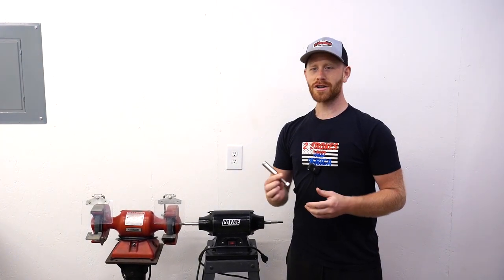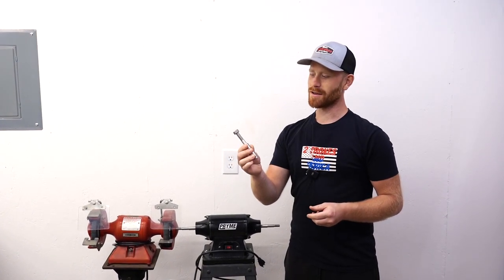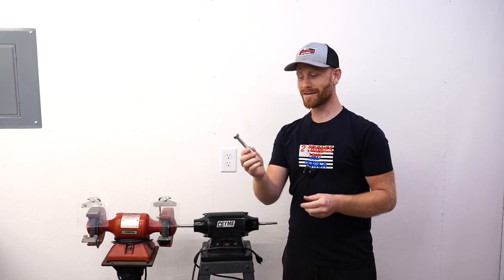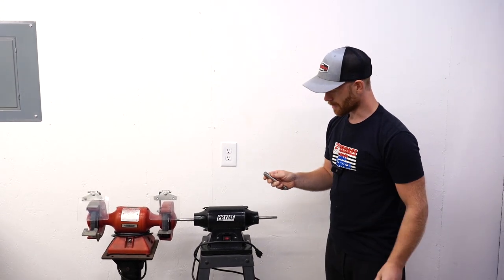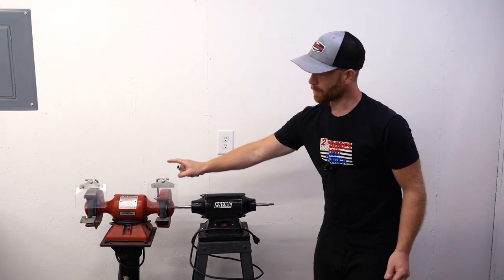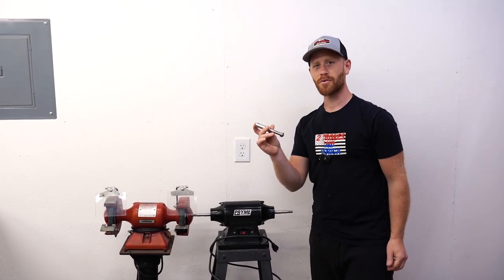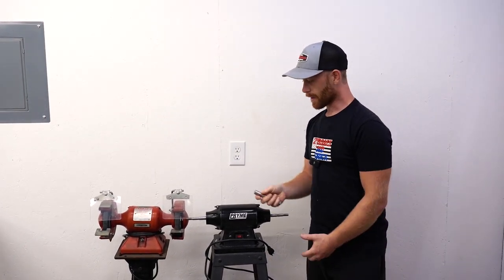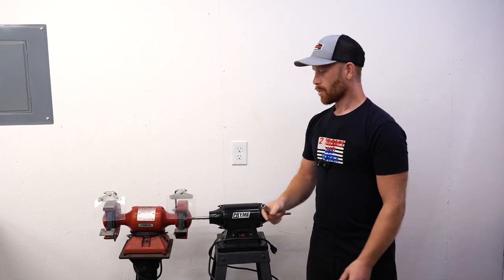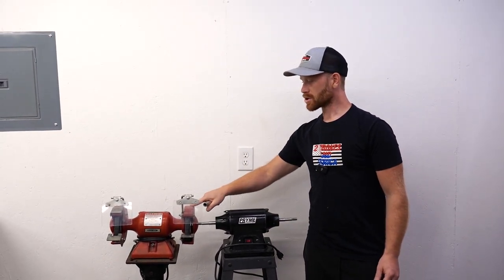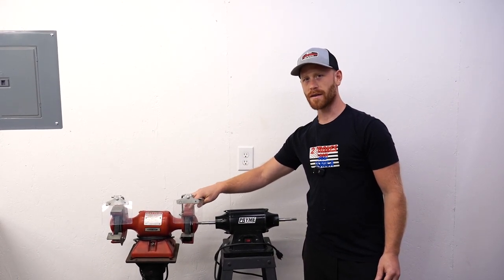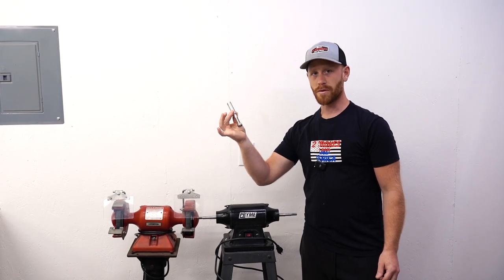A great addition to your shop or garage is the shaft extension, and this is not what you might think. It actually goes on the end of a buffing machine or a bench grinder and gives you an extra three and a half inches to work with as you're buffing your parts. So we're going to start with the bench grinder here and basically convert this into a buffing machine with this extension.